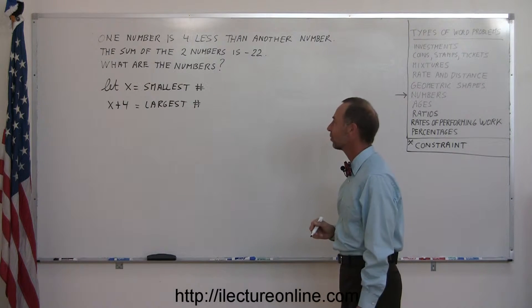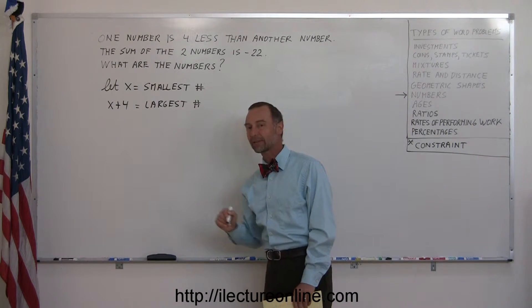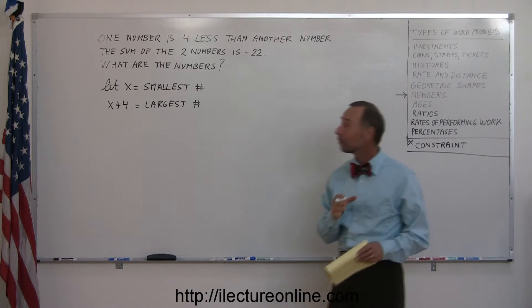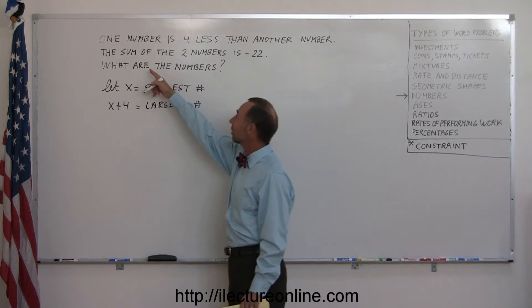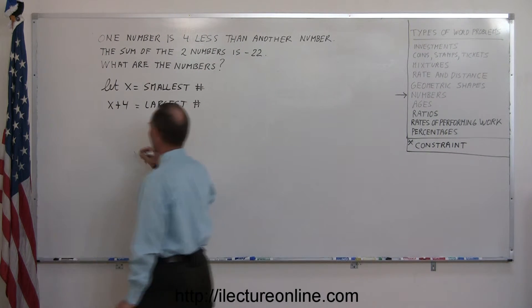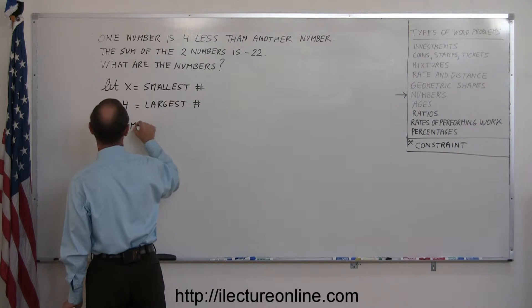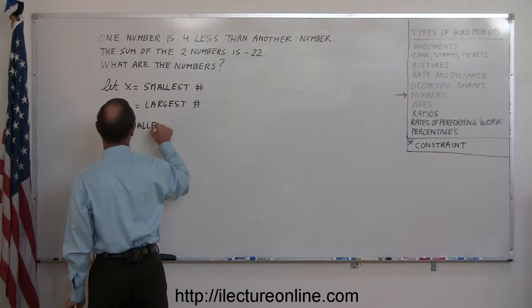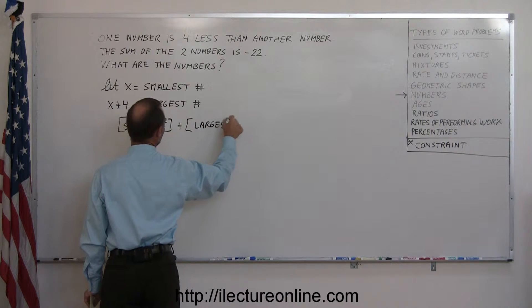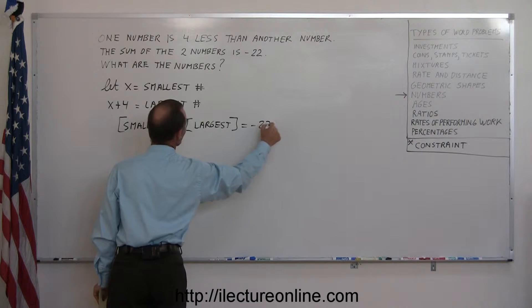Now we have our two numbers defined in terms of x. We now want to find a constraint, something that will help us solve the problem. Here it tells us that the sum of the two numbers is minus 22. So the smallest plus the largest adds up to minus 22.